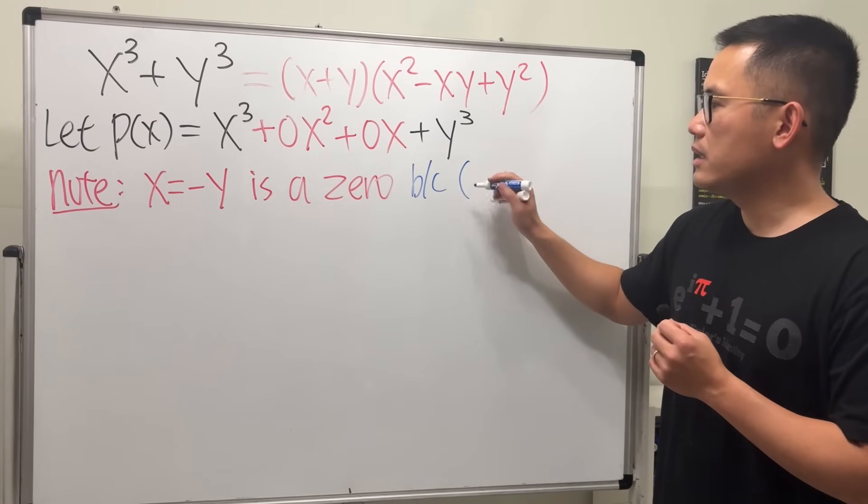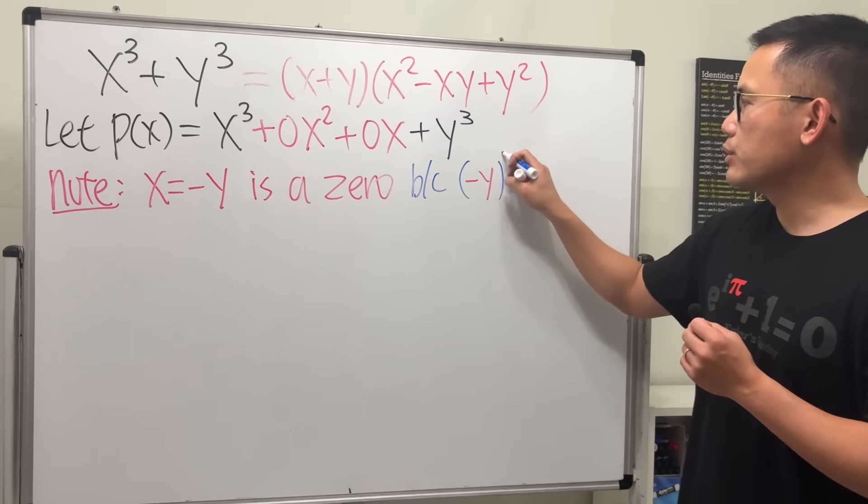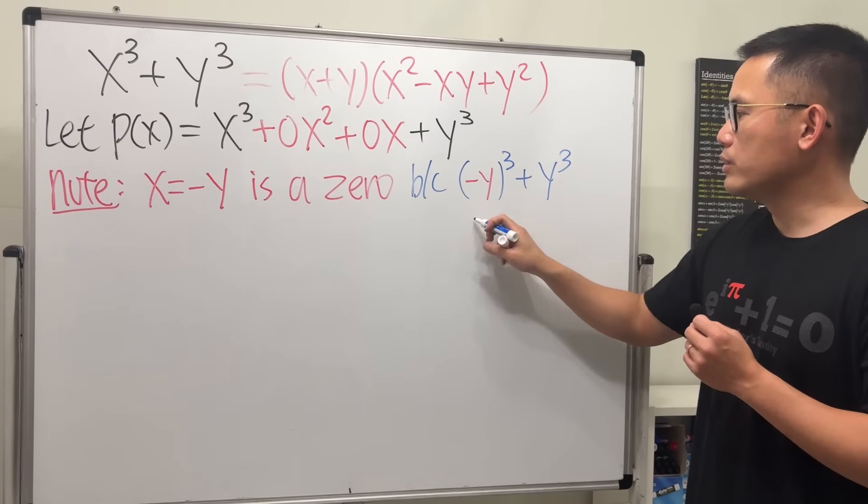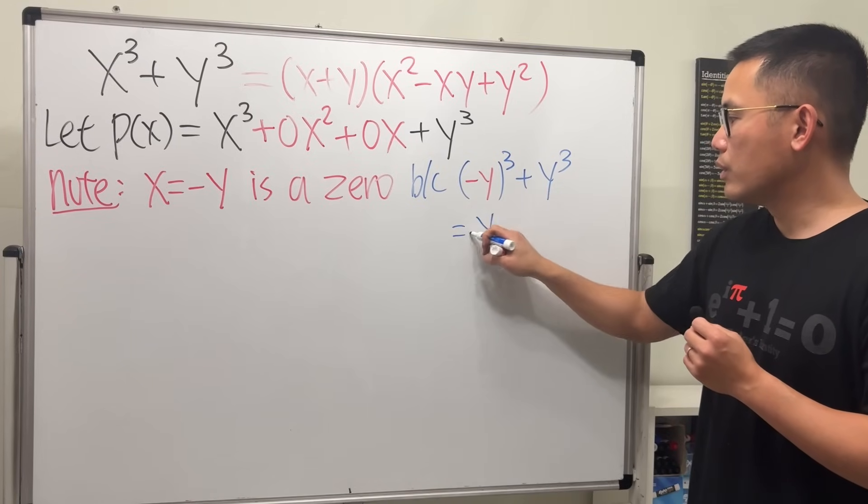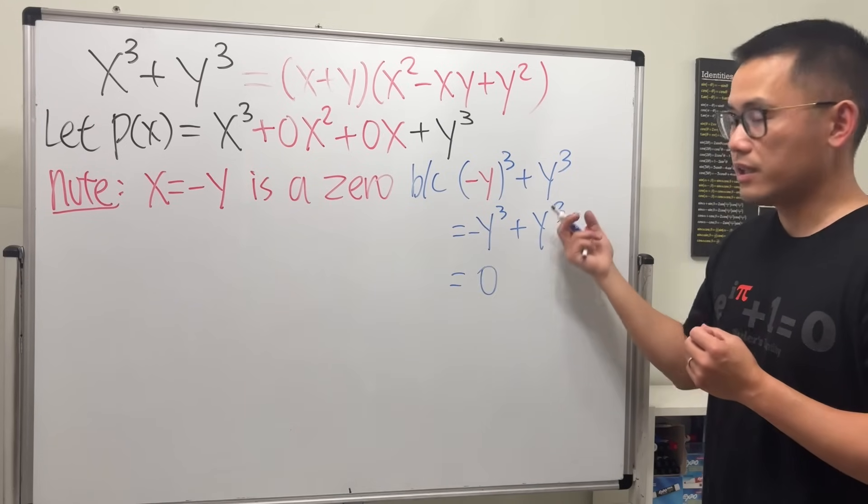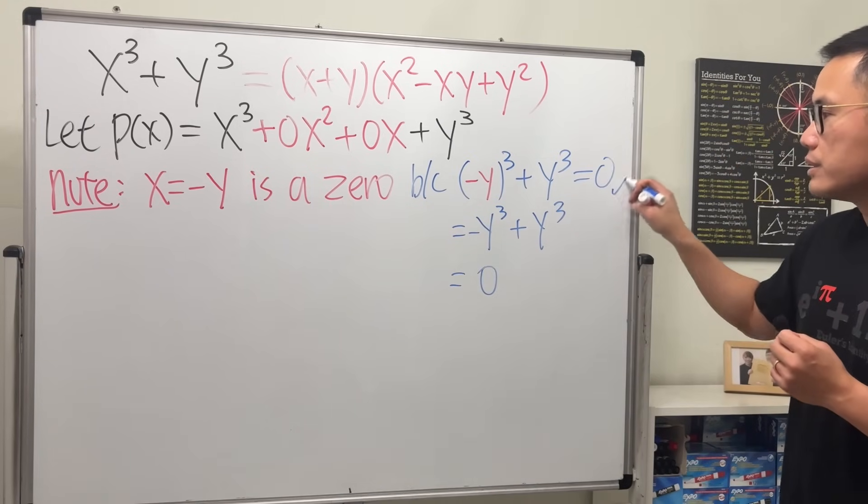If I plug in negative y into the x, raise that to the third power, and then add y to the third power, this will produce still negative y to the third power. Combine that with y to the third power, we get 0. So that's equal to 0.